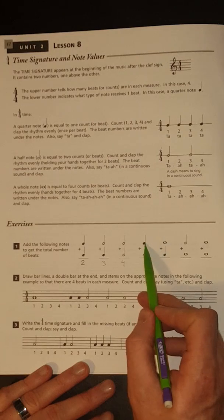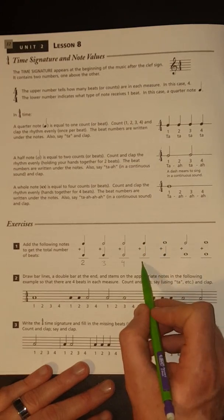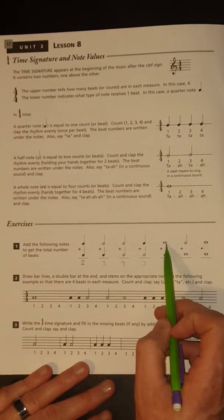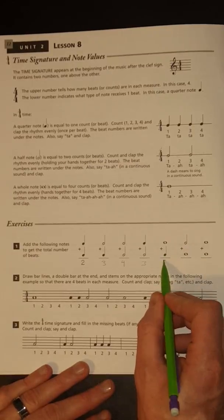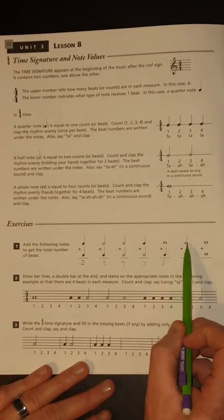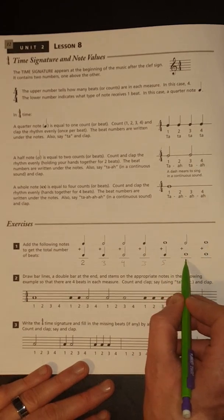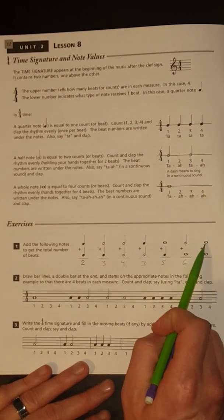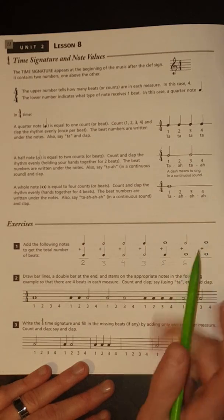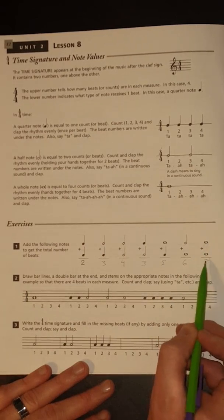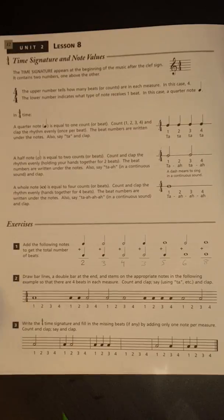1 for the quarter note. 2 for the half note for a total of 3. 4 for a whole note. 1 for a quarter note for a total of 5. 2 for a half note. 4 for a whole note for a total of 6. 4 for a whole note plus 4 for a whole note for a total of 8 counts. Just adding up the counts.